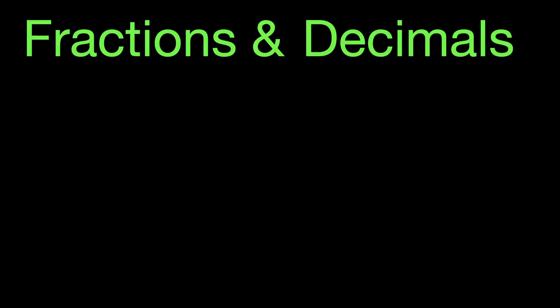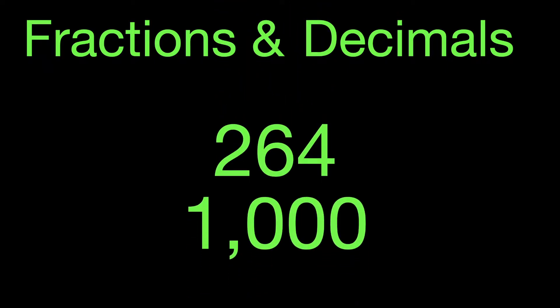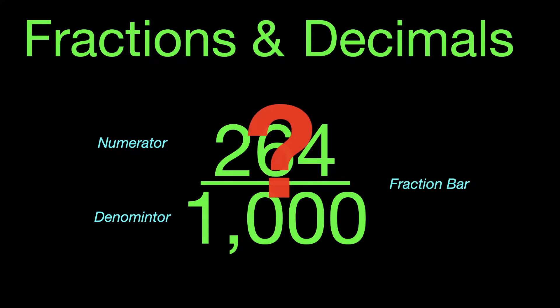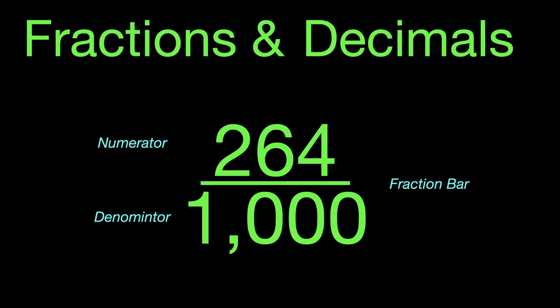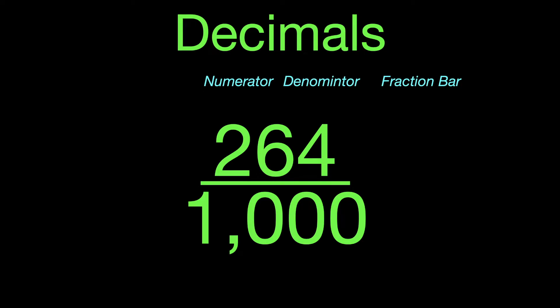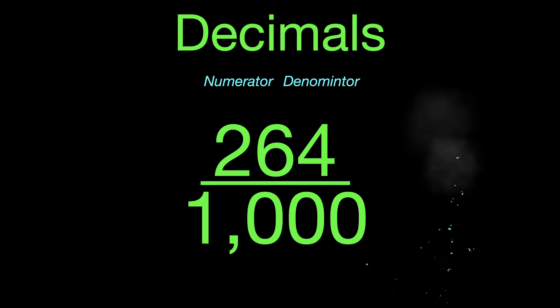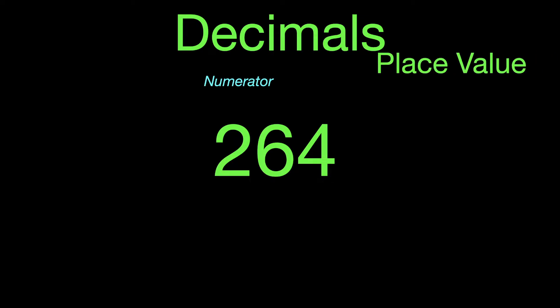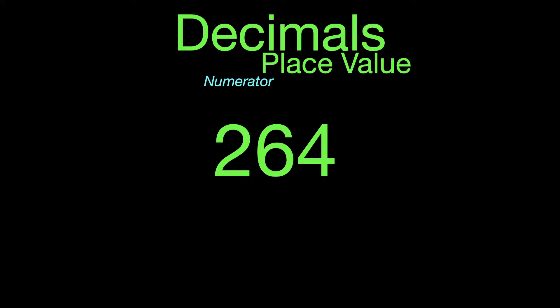Fractions and decimals are related — that's one of our main points today. For example, 264 thousandths is a fraction. Fractions have a numerator, a denominator, and a fraction bar. The question is how do you show fractions on a calculator where you can't show a numerator and denominator on a digital display? The answer is decimals. With decimal place values, you don't need a fraction bar or a denominator. However, you will need your numerator, and what we have in place of those things is place value.